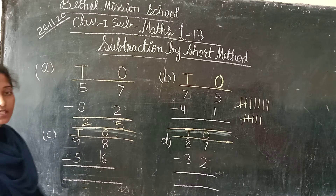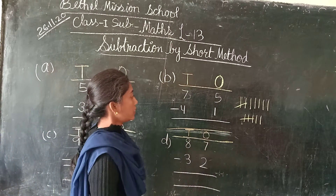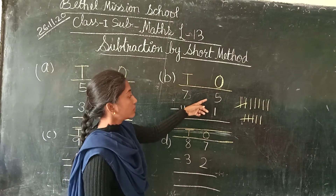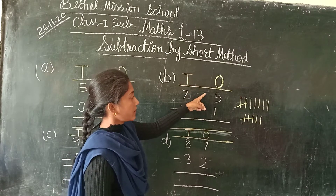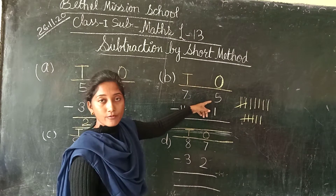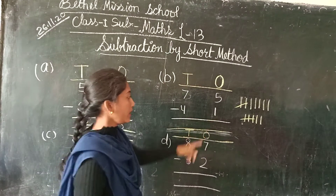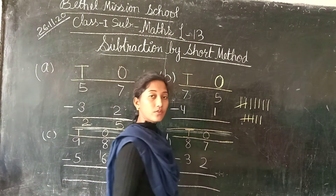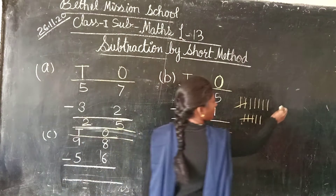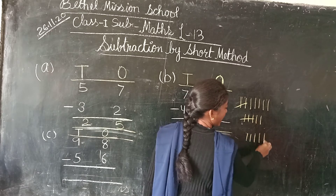Next we will see number B. Same — we have to subtract ones from ones, means 5 ones minus 1. So first we will draw 5 lines: 1, 2, 3, 4, 5.